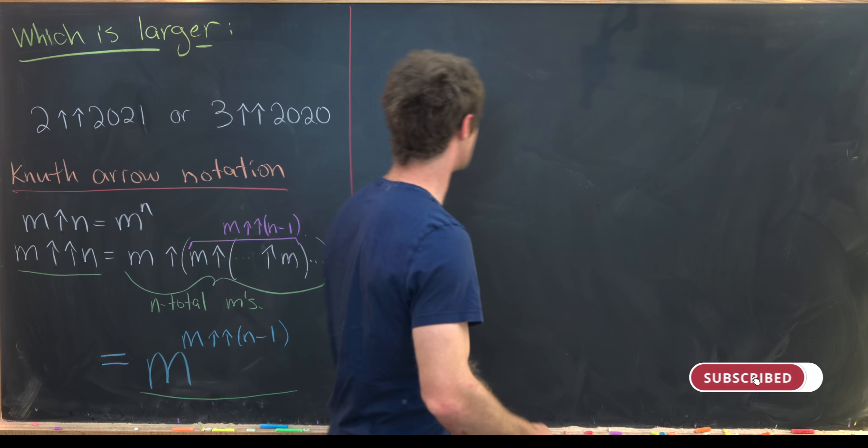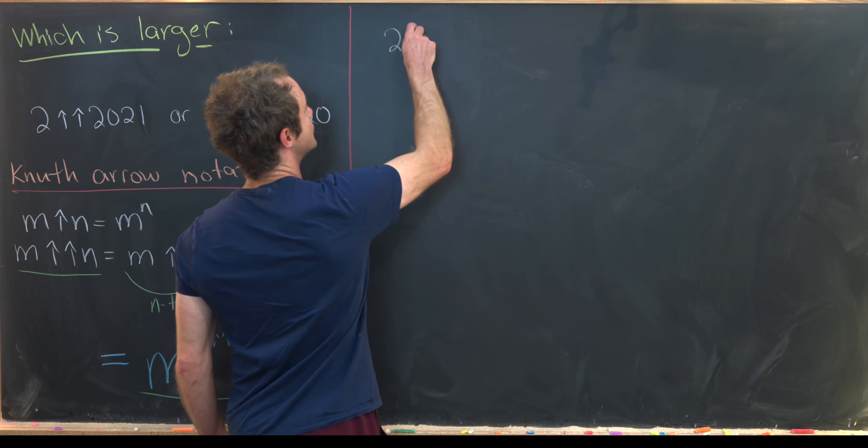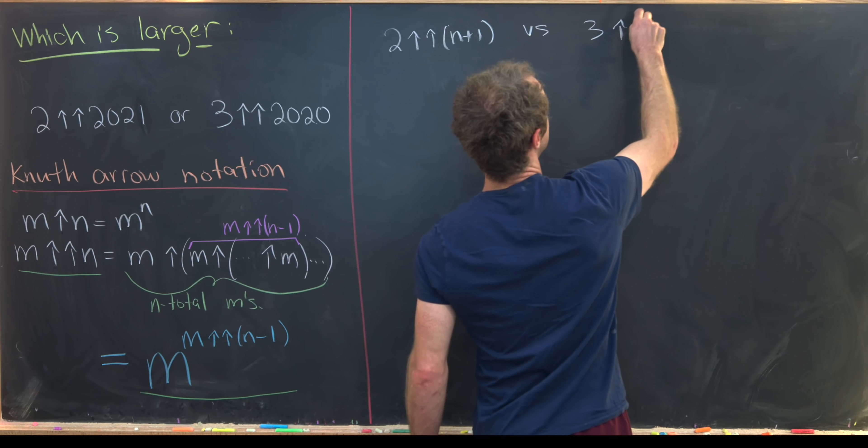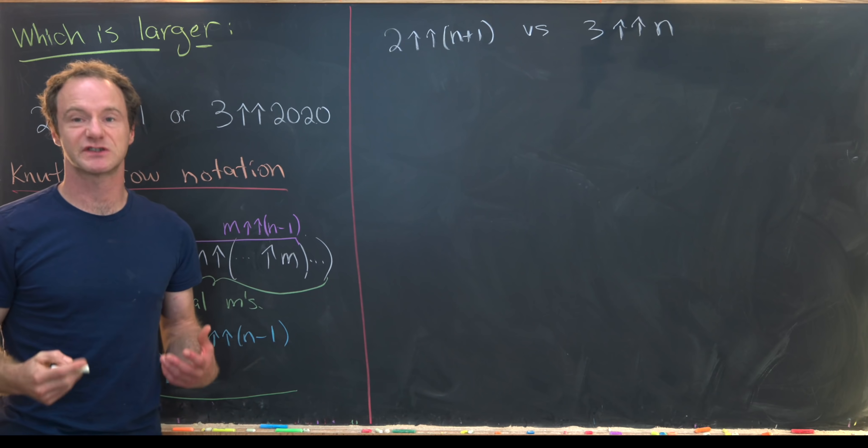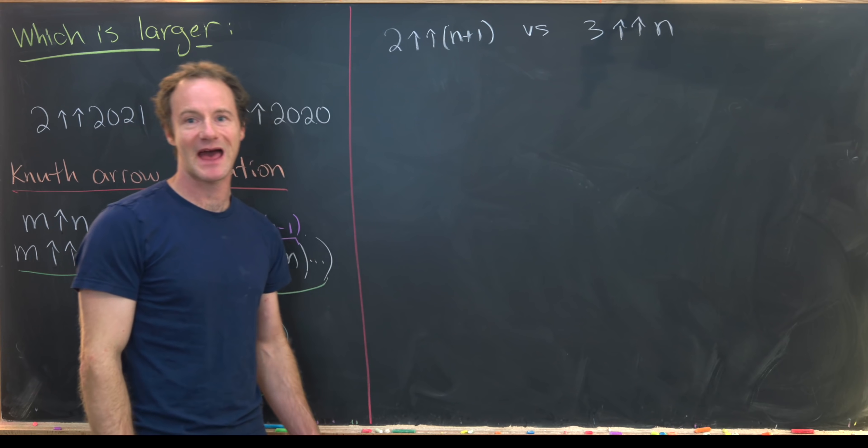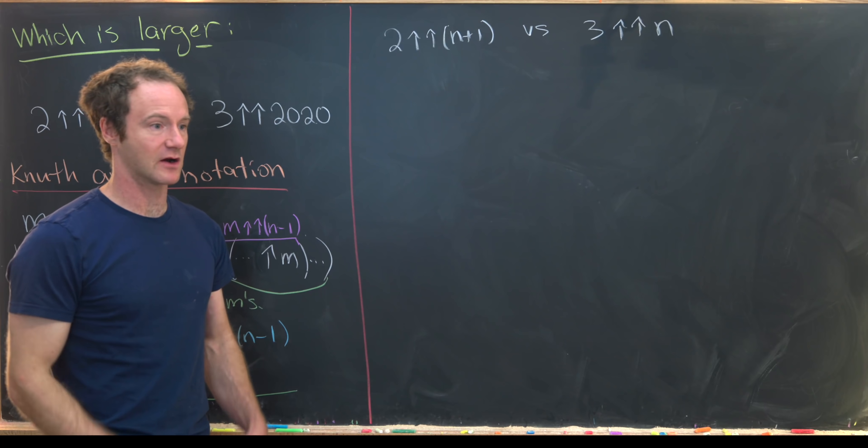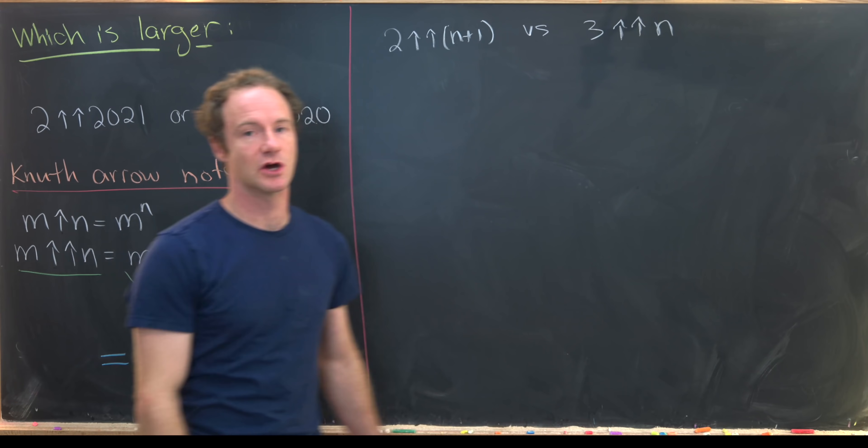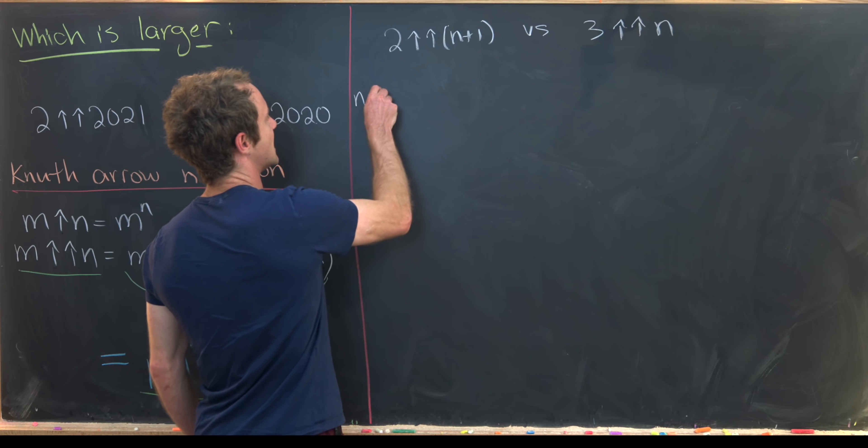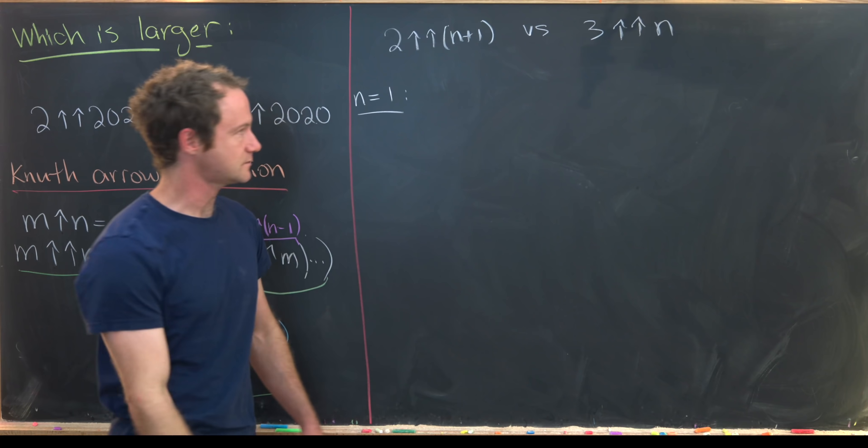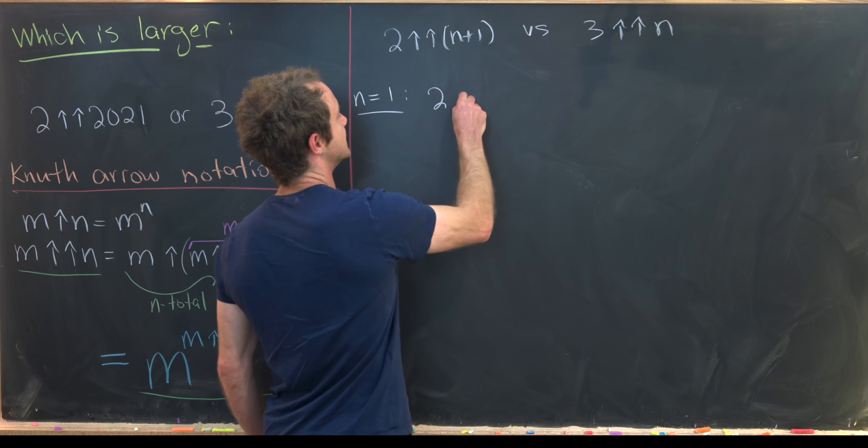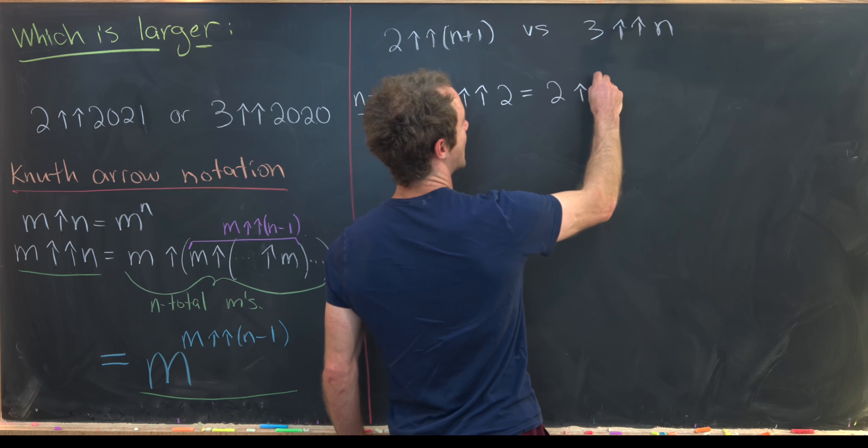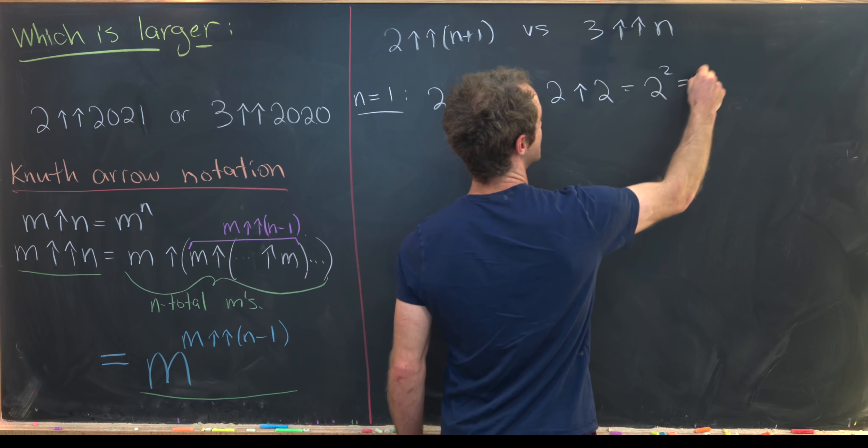Okay so let's explore a little bit. And what we will explore is 2 double up arrow n plus 1 versus 3 double up arrow n for some small values of n to see if we can see a pattern and then maybe prove that pattern. So let's start with n equals 1 maybe. Okay so if we've got n equals 1 then 2 double up arrow 2. Well that's going to be the same thing as 2 up arrow 2. Well that's 2 to the 2 which is 4.